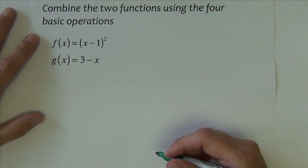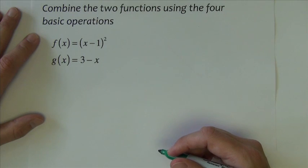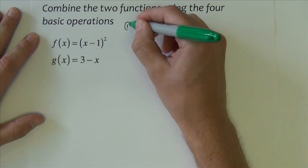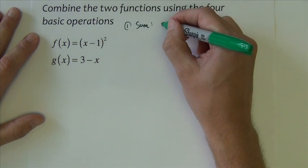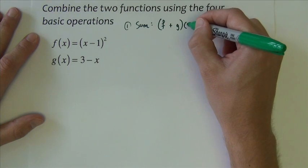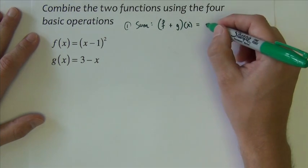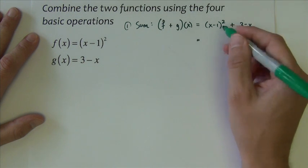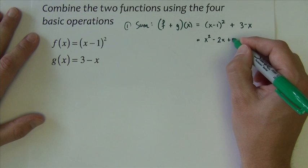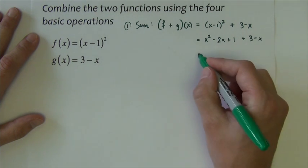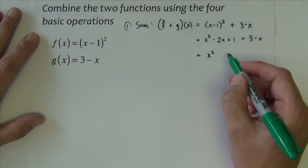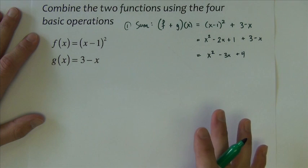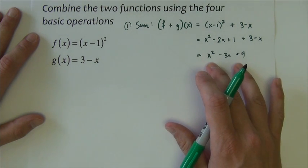The example slide tells us to combine the two functions using the four basic operations. So let's do first, we're just going to try and squeeze this in here. First, let's do a sum. So I want f plus g of x. So I want the f function, x minus 1 squared, plus the g function, 3 minus x. I'm going to have to FOIL x minus 1 squared. So x squared minus 2x plus 1. And then here's my 3 minus x. And then we combine like terms to make x squared minus 3x plus 4. We're not told that we need to factor it or solve it or do anything with it except find it. And that is it.